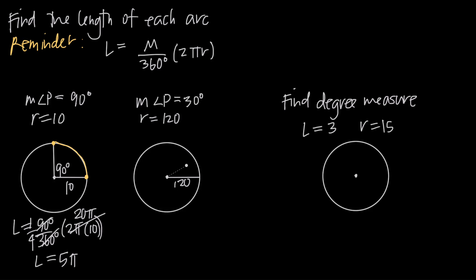Let's say that 30 degrees is right about here, something like this — we can say we have 30 degrees in here. So the arc we're interested in is this arc right here, with end points on the edges of the angle and everything in between.